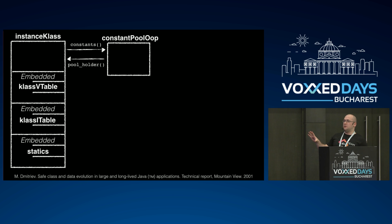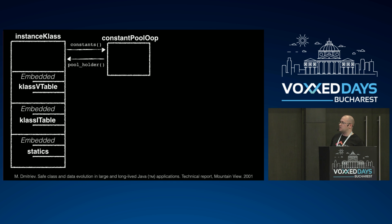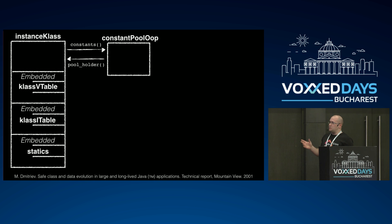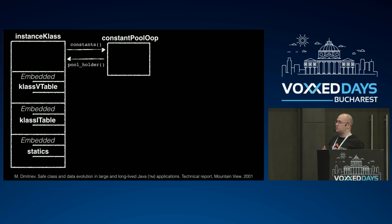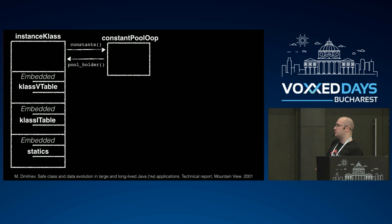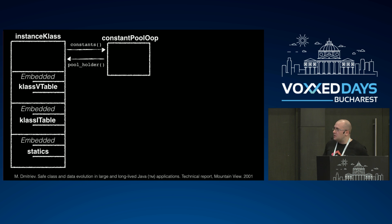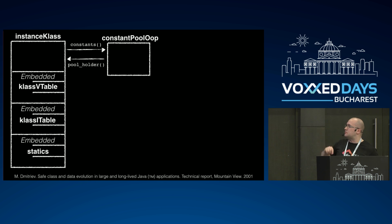A little bit of theory — how it works in the background inside the JVM. This diagram is adopted from the original paper on hot swap; today it's slightly changed but the main idea is the same. When JVM loads a class into memory, it has its own memory mapping for that class — this is the representation of a class in memory. The main structure is called 'instance class' and it has its own structures.